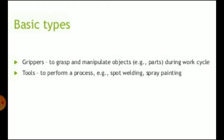There are two basic classes of end effectors. First is grippers, used to grasp and manipulate objects — for example, parts during the work cycle. The second type is special purpose tools attached to the wrist, used to perform a process — for example, spot welding and spray painting.